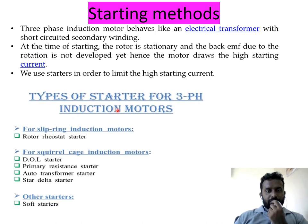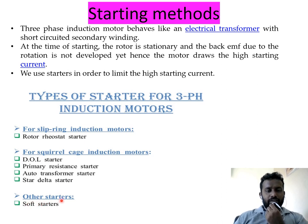The types of three-phase induction motor starters are: for slip ring induction motor, we use the rotor rheostat starter. For squirrel cage induction motor, we use DOL starter, primary resistance starter, auto transformer starter, and star-delta starter. There are also soft starters for other applications. We will discuss DOL, star-delta, primary resistance, auto transformer, and then the rotor rheostat starter.